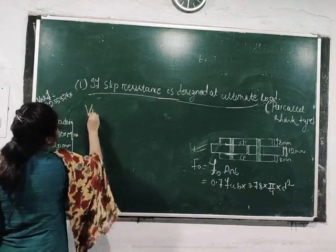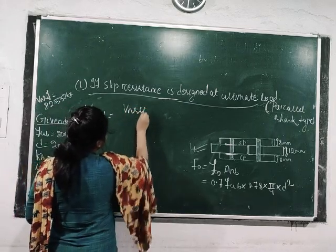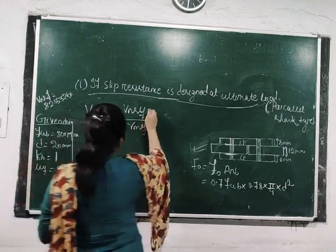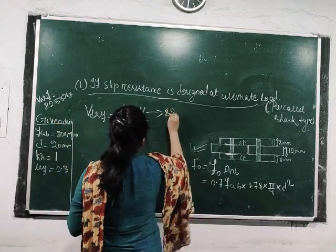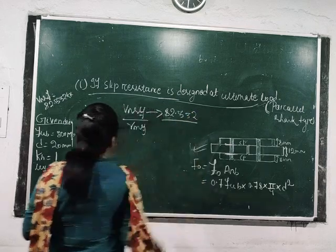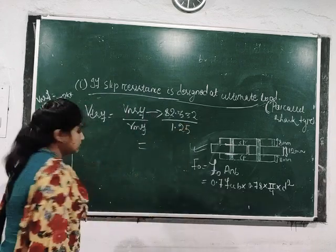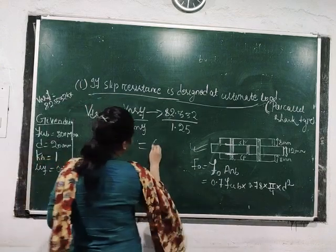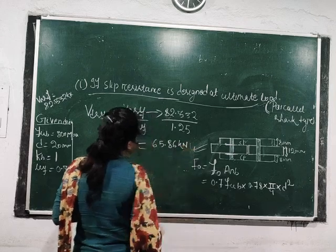The design shear capacity of the HSFG bolt for this condition = nominal shear capacity / γmf = 82.332 kN / 1.25 = 65.86 kN.